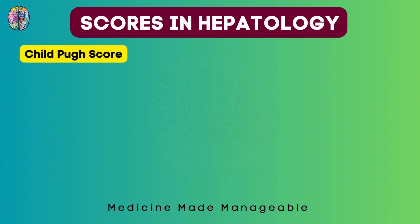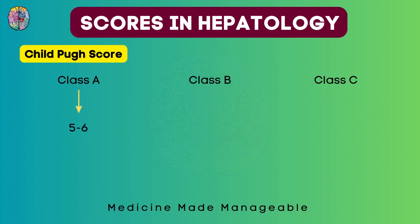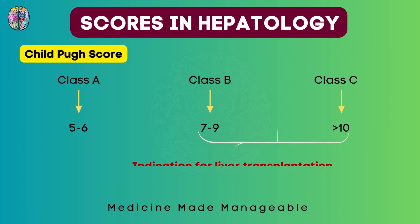Based on the total score, patients are divided into 3 classes. If the score is 5 to 6, Class A. If between 7 and 9, Class B. If more than 10, Class C. Patients in Class B and Class C are indicated for liver transplantation — basically, anyone with a score of 7 or more should be considered for liver transplantation.